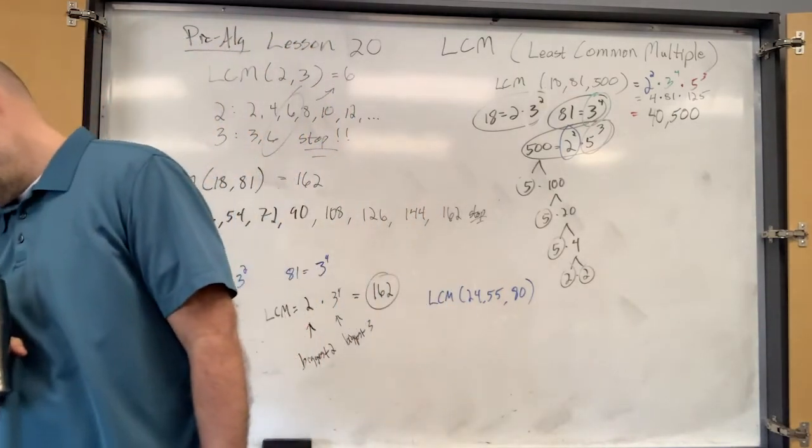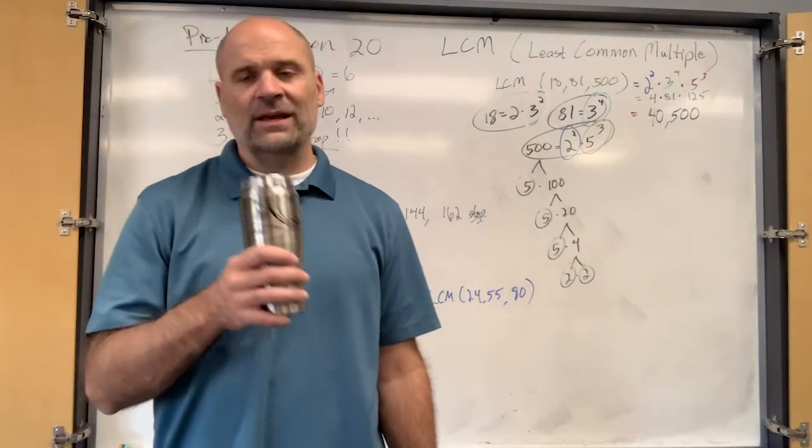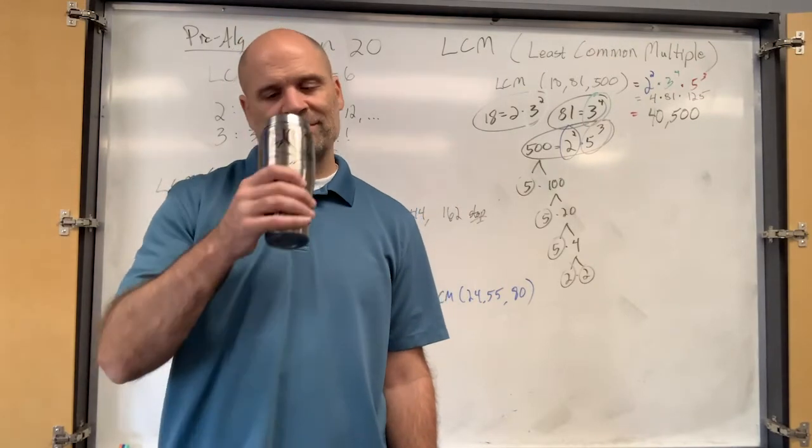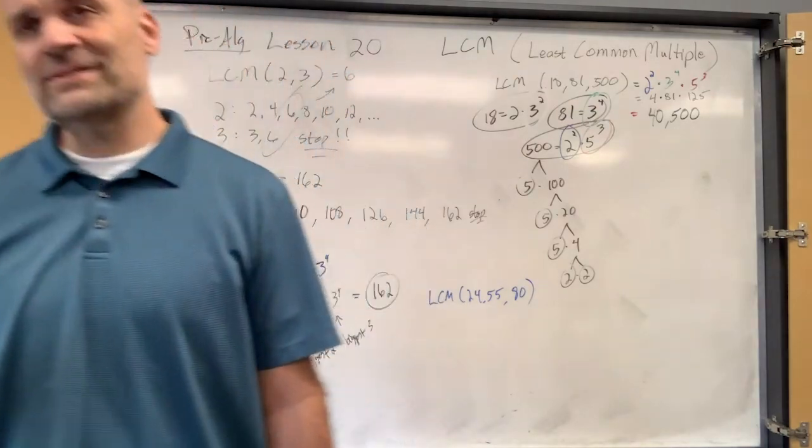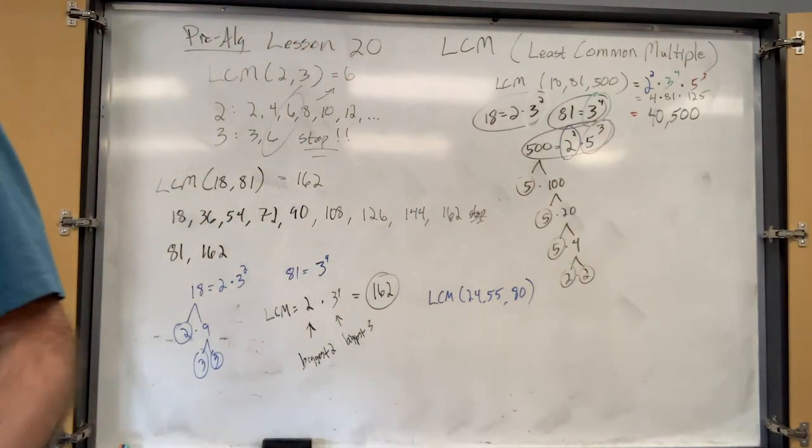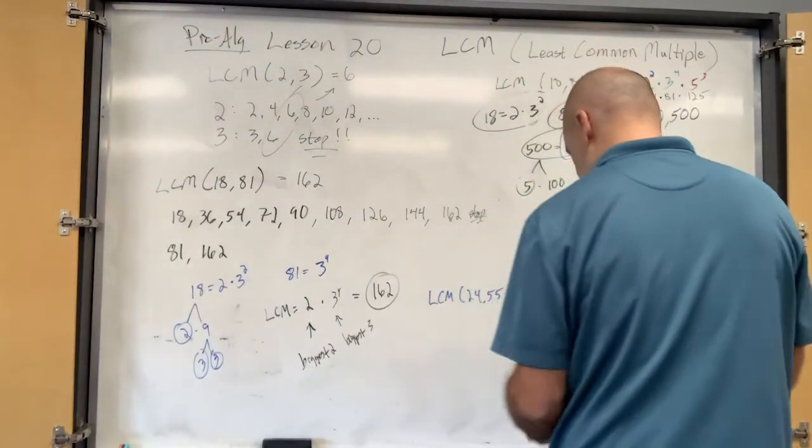Two thousand six hundred and forty. Okay, say the number correctly. Two thousand six hundred and forty. That's correct. Good job. All right, let me, let's break it down here. You want to get a good concept, right?